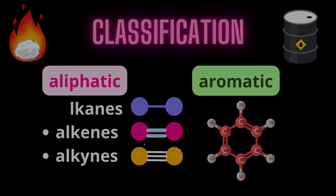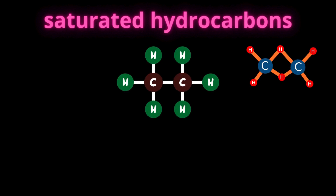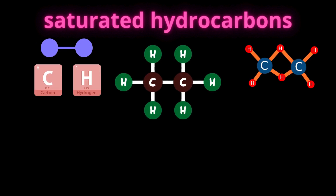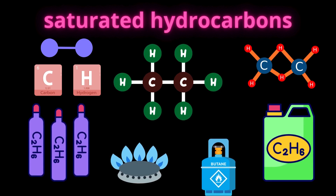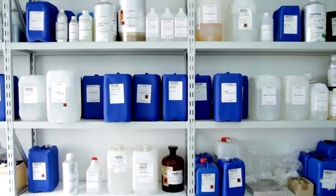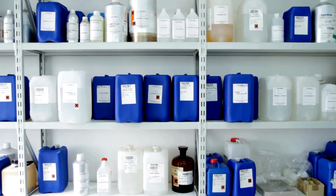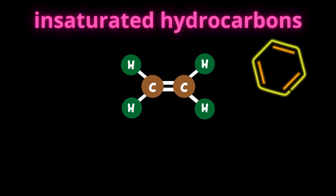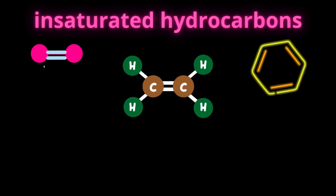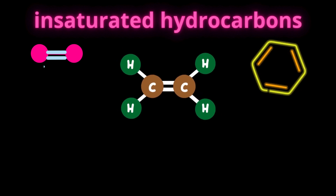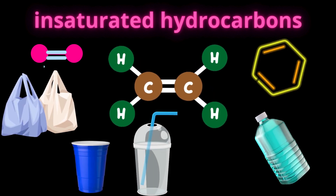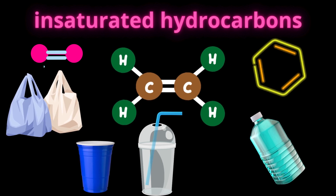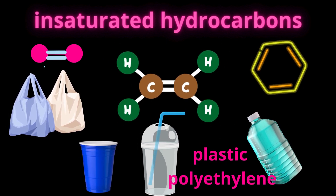Alkanes, also known as saturated hydrocarbons, are composed exclusively of single bonds between carbon and hydrogen atoms. They are highly stable and widely used as fuels and in the production of basic chemicals. Alkenes contain at least one double bond between carbon atoms in their molecular structure, which gives them unique properties and makes them valuable for the synthesis of chemicals and polymers.